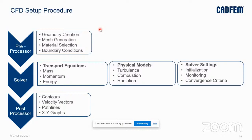Parameters of interest could be velocity, pressure, temperature, density, etc. Material selection is used to define fluid or solid properties. In case of conduction, this defines thermal conductivity, coefficient of thermal expansion, etc. For a fluid, it could be density, viscosity, etc. Appropriate boundary conditions that are as close to real representation as possible are necessary to get an accurate solution. Boundary conditions like pressure inlet, velocity inlet, and mass flow inlet can be described for flow inlets, while pressure outlet and mass flow outlet can be defined for flow outlets. The choice and pairing of appropriate inlet and outlet conditions is quite important.